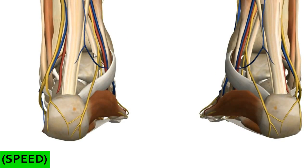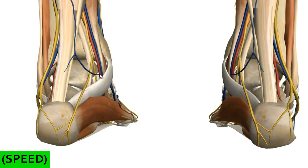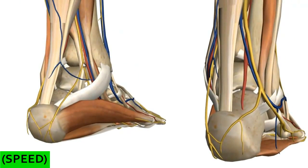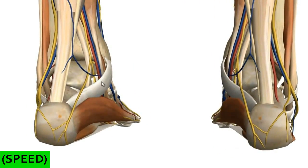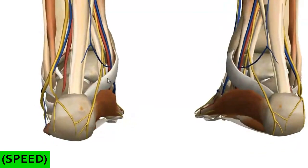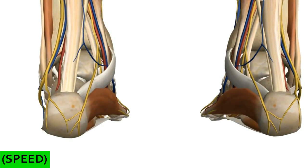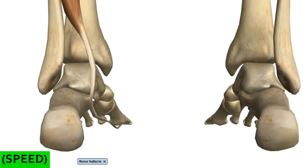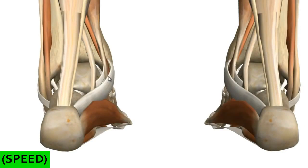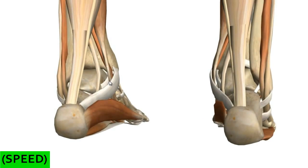We've also got the tibial nerve, which runs in the tarsal tunnel. Finally, there's the flexor hallucis longus tendon, which lies most posterior and laterally, running behind the talus and then under the shelf of bone on the calcaneus — the sustentaculum tali. That covers the flexor retinaculum, the tarsal tunnel, and its contents, which are quite important to know.